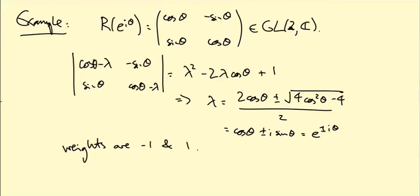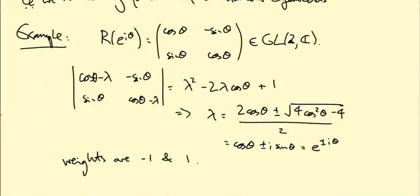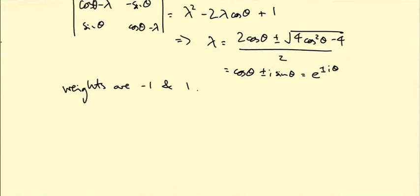And what basis of vectors are we supposed to pick? We're supposed to pick an eigenbasis. So what are the eigenvectors? The eigenvectors for e^{iθ} and e^{-iθ} are, I think, (1,i) and (-i,1), respectively.